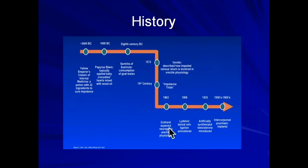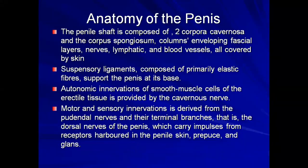Then someone came in and said, let's consume the testes of goats. This practice is actually quite prevalent in some parts of Africa, including Kenya. Coming down to the 1860s and 1908, we see modern science emerging with procedures such as ligation of the dorsal vein, and by the 1960s and early 80s, prosthetic implants were available. This timeline shows us that this problem has been with us for a very long time, and the chances of it disappearing are almost zero.